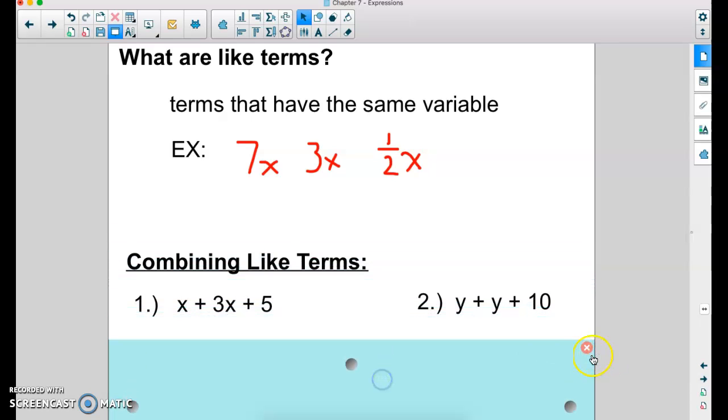Okay, so let's practice combining like terms a little bit. We have two example problems here. I want you to write both of them down in your notebook. Number one, we have x plus 3x plus 5. We want to simplify this expression by combining the like terms. So in number one, what are the like terms that I can combine? It's x plus 3x. This is the same thing as 1x. If you want to write that 1 in there, you can. A regular x by itself is the same thing as 1x. So 1x plus 3x, that's 4x.